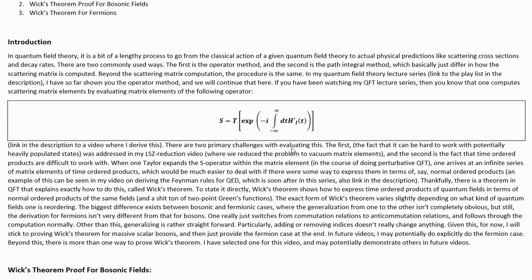which consists of a time-ordered exponential. There's a link to the derivation of this operator in the description as well. There are two primary challenges with evaluating this. The first, the fact that it can be hard to work with potentially heavily populated states, was addressed in my LSE reduction video, where we reduced the problem to vacuum matrix elements. And the second is the fact that time-ordered products are difficult to work with. That's what we'll be addressing in this video.